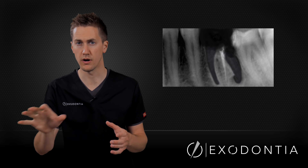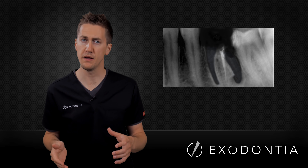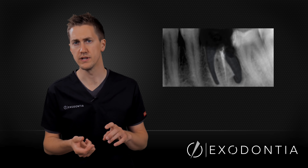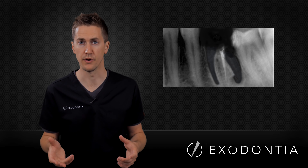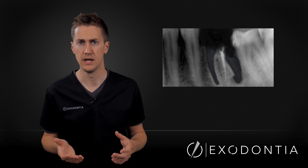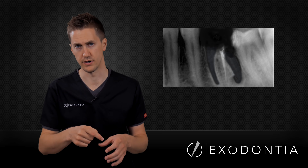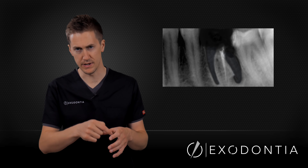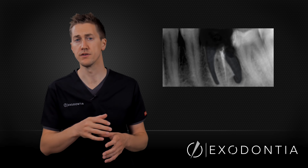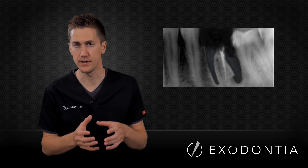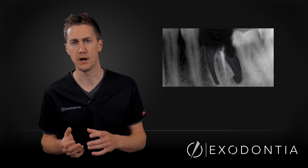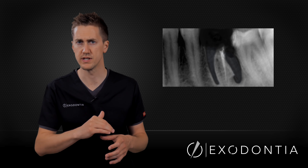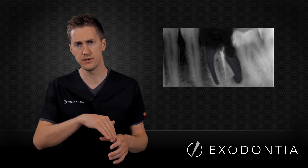Our initial luxator approach isn't working and we're having difficulty establishing a purchase point on this accessory root — it's broken off basically flush with the bone. Our option now is to remove some bone using a handpiece, artificially creating a purchase point. You use a 699 or 700 surgical-length bur in your surgical handpiece, creating a trough around that root structure at the expense of tooth more than bone. This creates space for the instrument, removes bony obstructions anchoring the root, and lets you place an instrument for a good purchase to lever or luxate the root out of the socket.